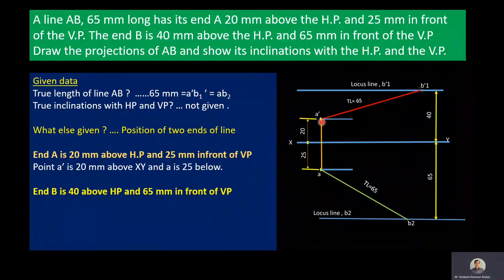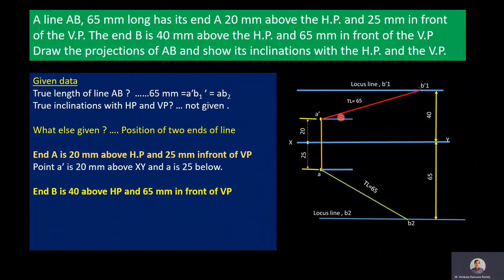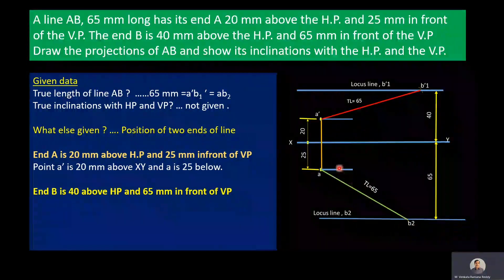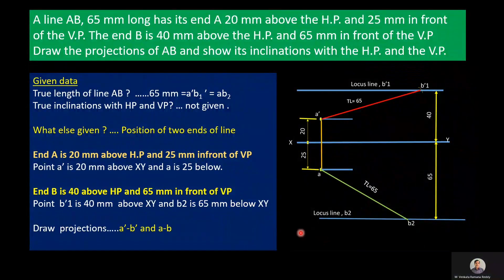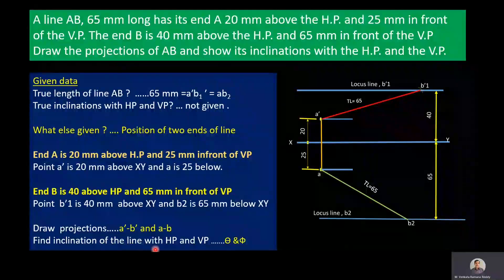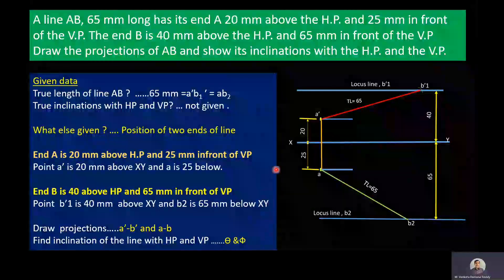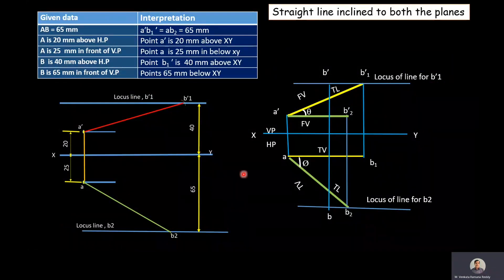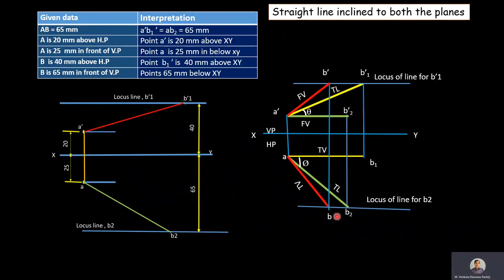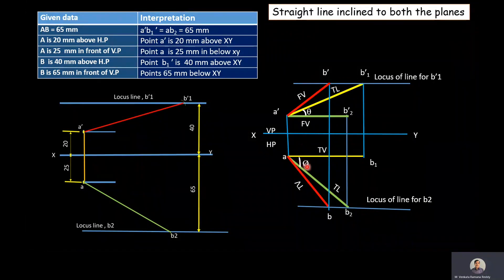Our objective is to draw the final projections, that is A'B' and AB, and to find the inclinations of the true lengths: A'B1' with HP and AB2 with VP. We need to draw projections A'B' and AB, and find the true inclination of the line with HP (theta) and with VP (phi).